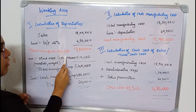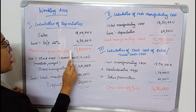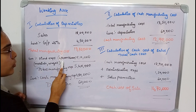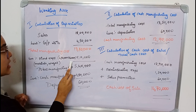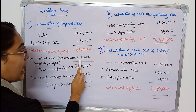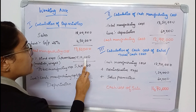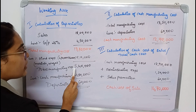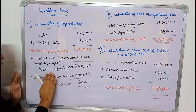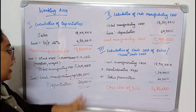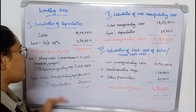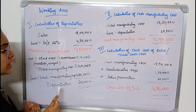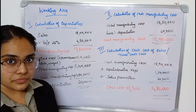Deducting gross profit of 4 lakh 50 thousand from sales gives us a total manufacturing cost of 13 lakh 50 thousand. From this, we deduct all direct expenses: materials 4 lakh 50 thousand and wages 3 lakh 60 thousand, totaling 8 lakh 10 thousand. This gives total manufacturing expenses of 5 lakh 40 thousand. The cash manufacturing expense given in the question is 4 lakh 80 thousand. Deducting cash manufacturing expense from total manufacturing expense gives us depreciation of 60 thousand.